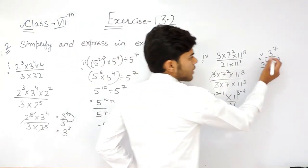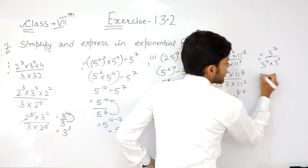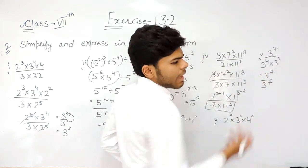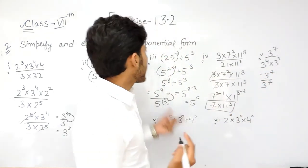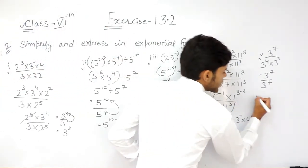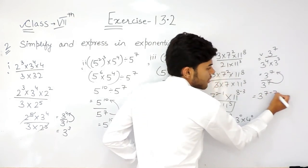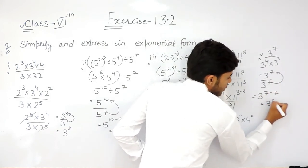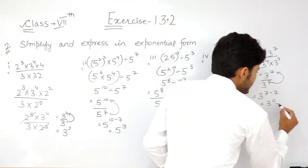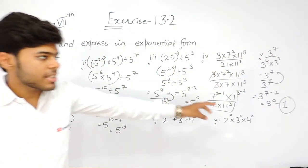Now part 5 — in the denominator the bases are same, so powers get added up. So this will be 3 to the power 7 upon 3 to the power 7. We can directly cancel this out and write 1. But it has specifically said to use the laws of exponents. So what we will do is, this 7 will go in the numerator, it will change its sign. That will be 3 to the power 7 minus 7, which is 3 to the power 0. And anything raised to the power 0 will give us 1.